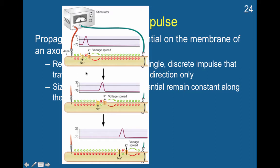In this way, one sodium channel will open, the membrane becomes positive, then the next one opens, and the next one opens, and it travels down the axon. After this section of the axon becomes more positive, the voltage-gated potassium channels open, and this helps this portion of the axon return to its negative resting potential.